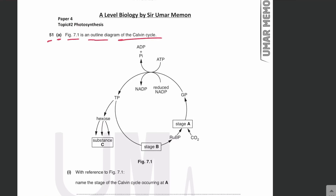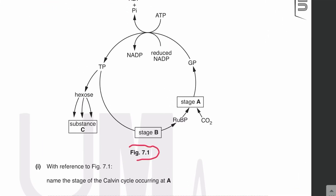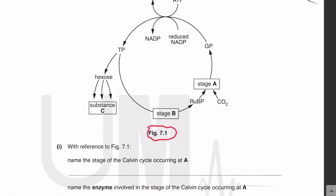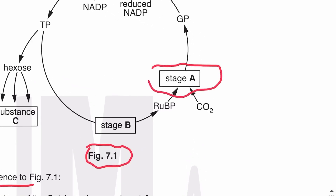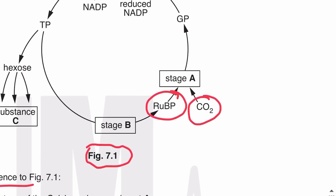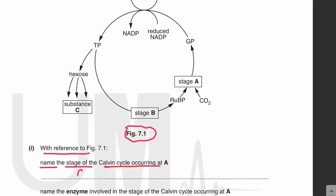In figure 7.1 we can see the Calvin cycle. With reference to figure 7.1, name the stage of the Calvin cycle occurring at A. We can see that at stage A, RuBP or ribulose bisphosphate is combining with carbon dioxide. So stage A is carbon dioxide fixation, because the combination of RuBP and CO2 is known as carbon dioxide fixation, and it creates GP.